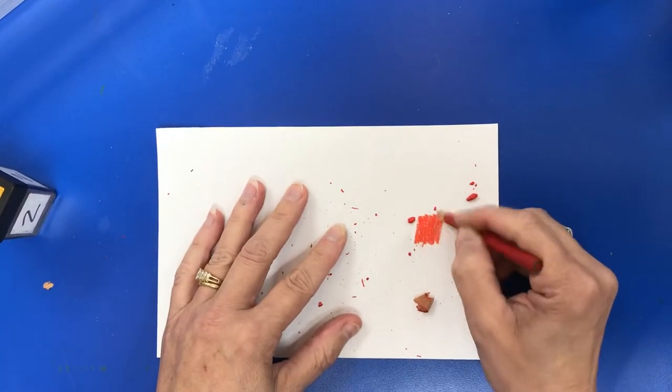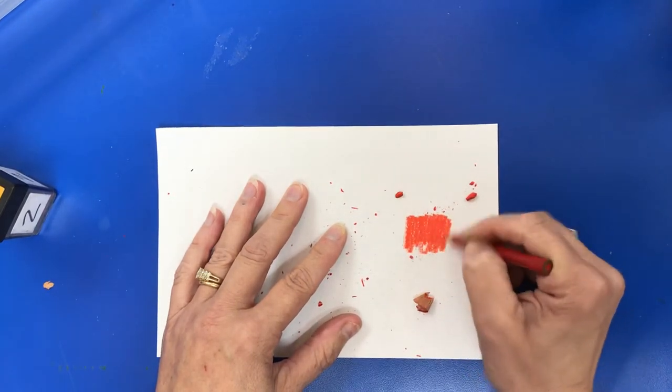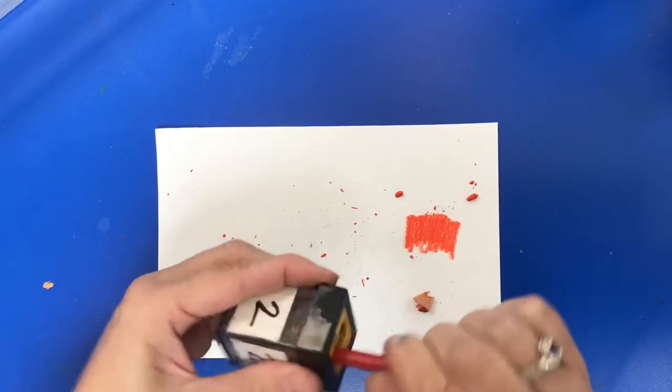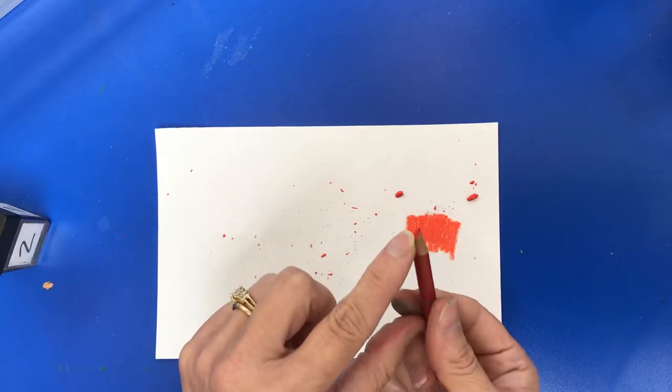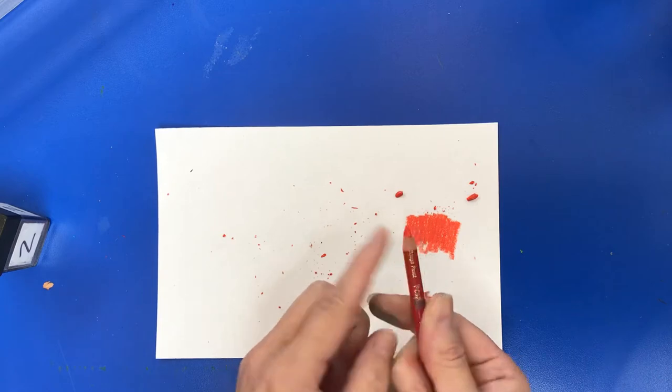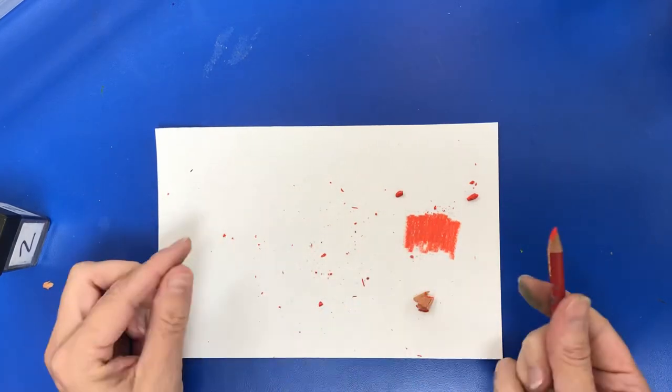I would just continue to use the colored pencil until I can no longer get color, and then I would go back in and sharpen it a little bit more. I would not sharpen to a fine point, just sharpen until you can see a little bit of color and you can use it. Yes, that means you might do more sharpening, but you're also going to have a lot less breakage happening.